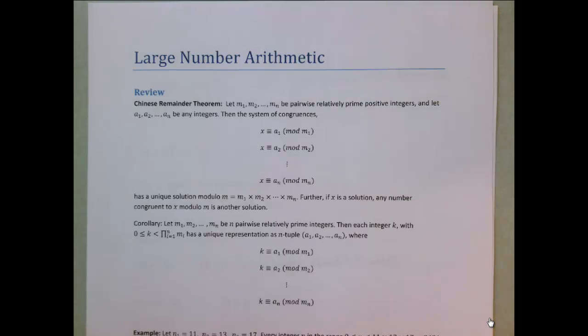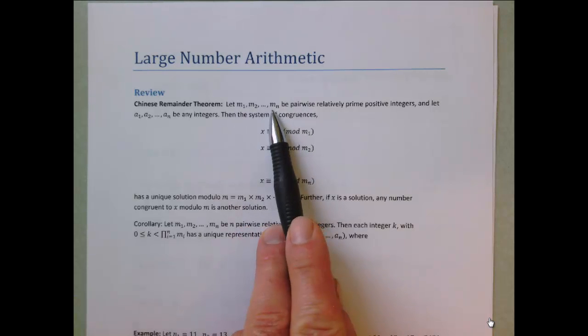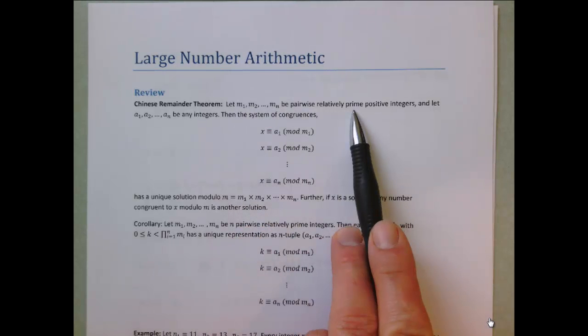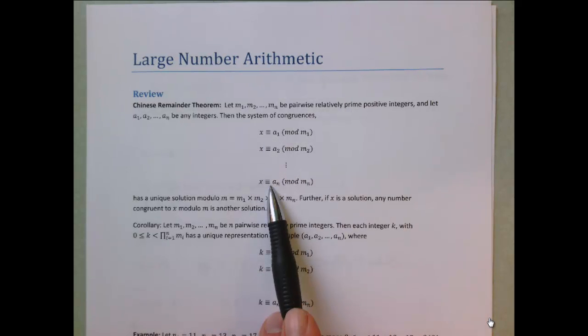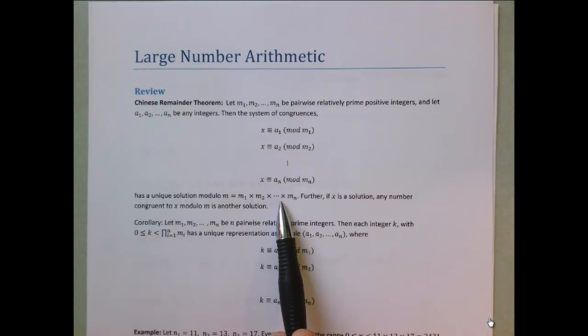For the statement of the theorem itself, if we've selected n moduli which are pairwise relatively prime positive integers and we've constructed a system of linear congruences of this form, then there must be a unique solution modulo m, where m is equal to the product of the moduli m1 times m2 through mn. Furthermore, any two solutions of this system of linear congruences must be congruent modulo m.